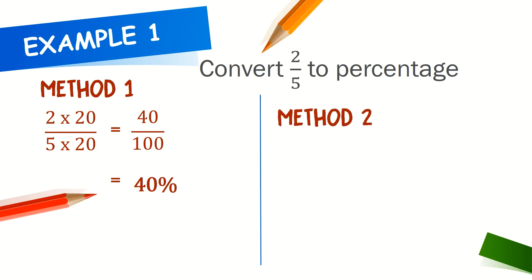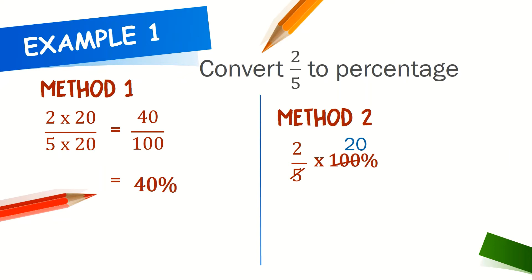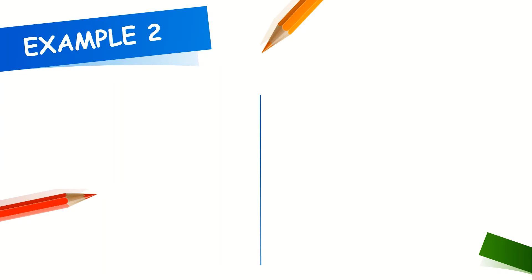Method 2: divide 100 by 5, then multiply with 2. You will get 40%. Let's look at example 2.